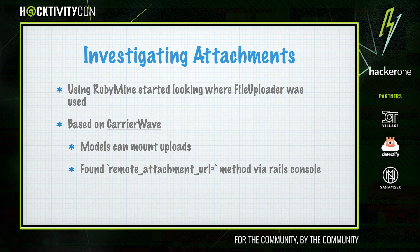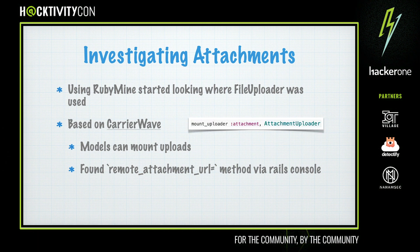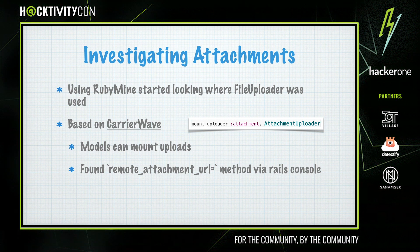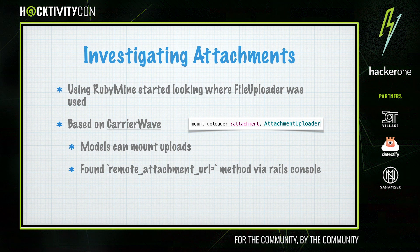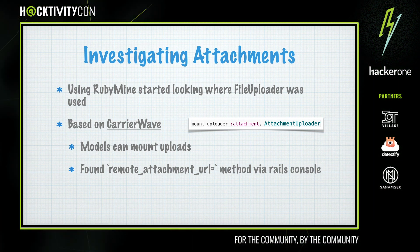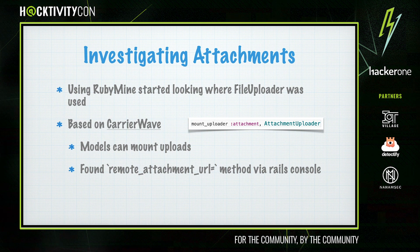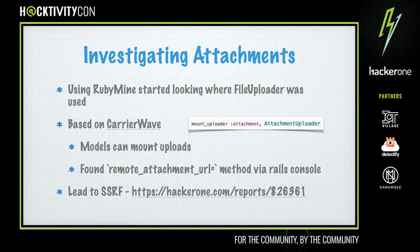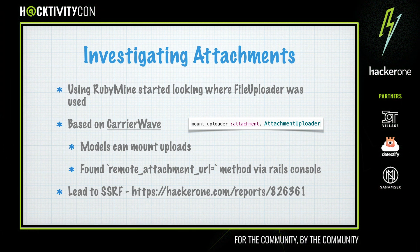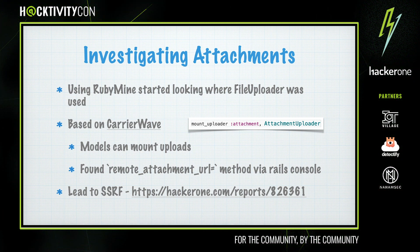It turns out that when you use the CarrierWave method mount_uploader, it creates a bunch of helper methods — including one that allows a URL to be given, which it would download and attach to the model as a file. This wouldn't normally be an issue, but due to how GitLab project imports work, it's actually possible to modify the JSON of an export to get this property set, which downloads the URL and adds it to the note as an attachment. Since this fetch was done inside the CarrierWave gem, it bypassed all of GitLab's server-side request forgery protection, allowing internal services to be queried and their output attached to the note.